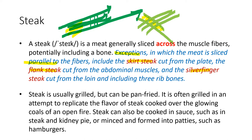The skirt steak is from the plate, and the flank steak is from the abdominal muscles. Steaks are usually grilled, but can be pan-fried to replicate the flavor of meat cooked over glowing charcoal. Steak can also be cooked in sauce, such as steak and kidney pie, or minced and formed into patties such as hamburgers.